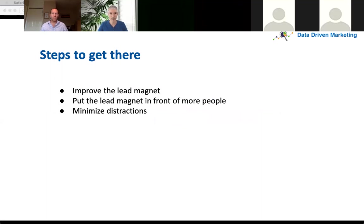There are a few steps to get there, and this is basically what I'm going to talk you through. Number one: improve the lead magnet. Number two: put the lead magnet in front of more people. And number three: minimize distractions. This is not terribly complex as a concept - everyone can get their head around it. Have a better lead magnet, put it in front of more people, and minimize distractions. The devil's in the detail, so I'm going to talk you through exactly what the steps were.